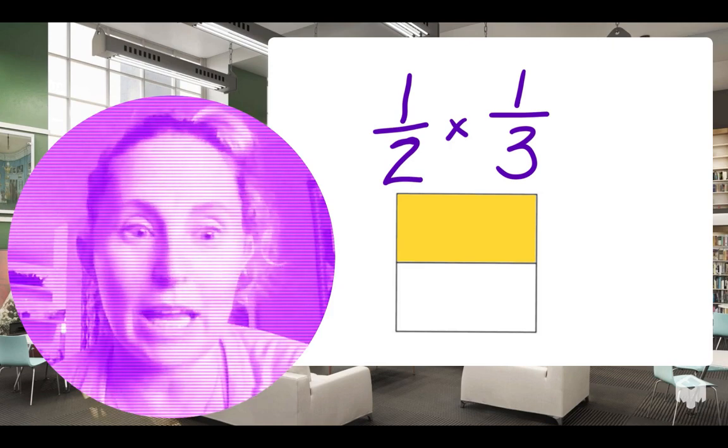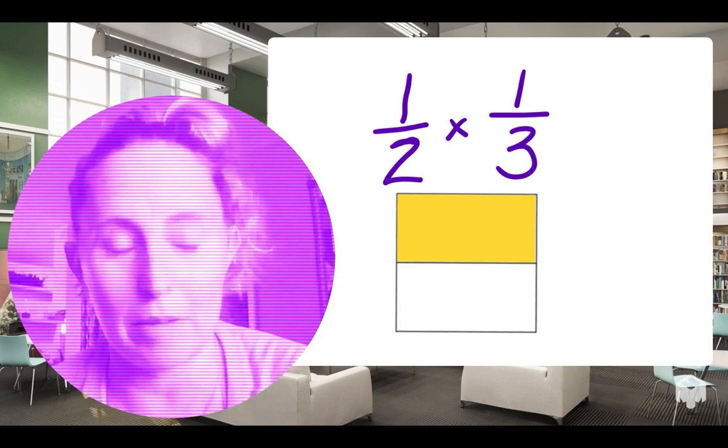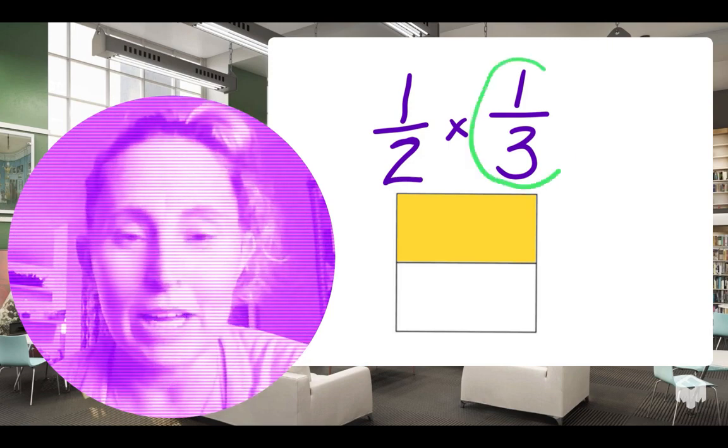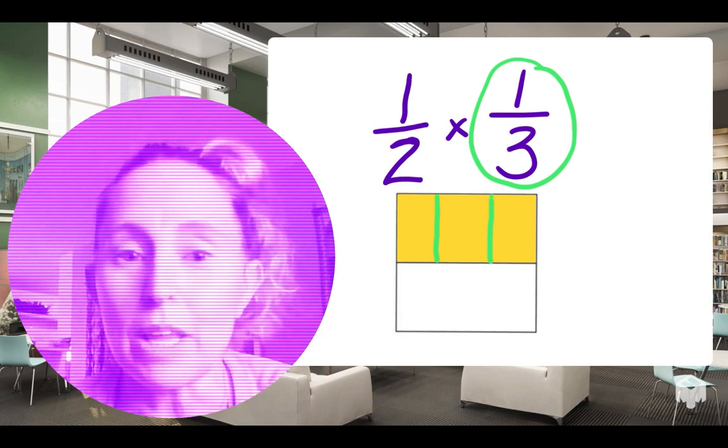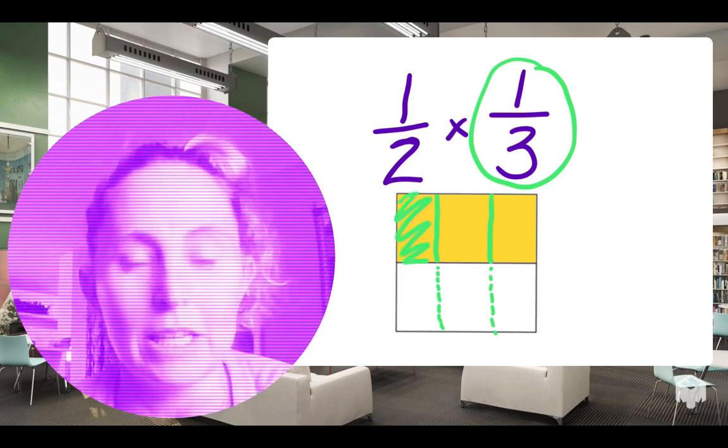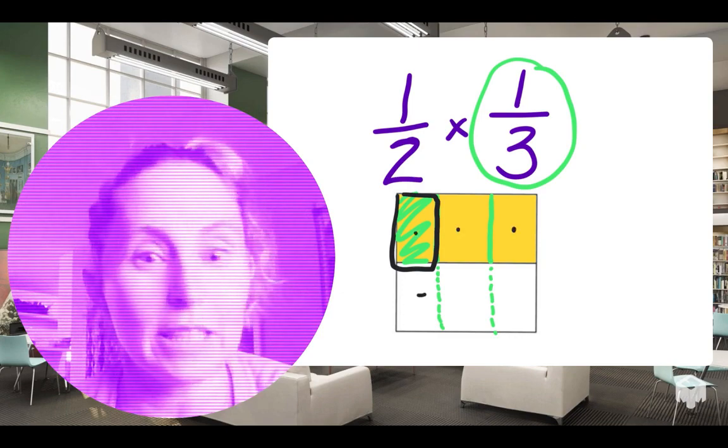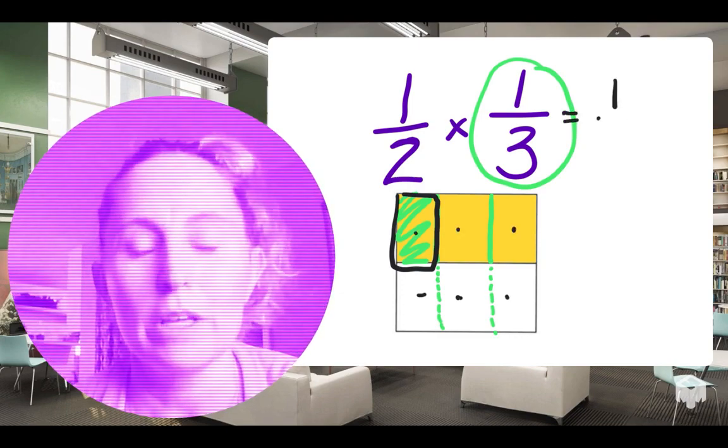I have a half, but I only have it one-third of the time. So I'm going to shade in a half, and then I'm going to cut it into three equal groups. Looking at this picture, if I can see that I have one-half, one-third of the time, one of those little pieces is worth how much of the total? Well, it would take six of them to make a whole, so it would be equal to one-sixth.